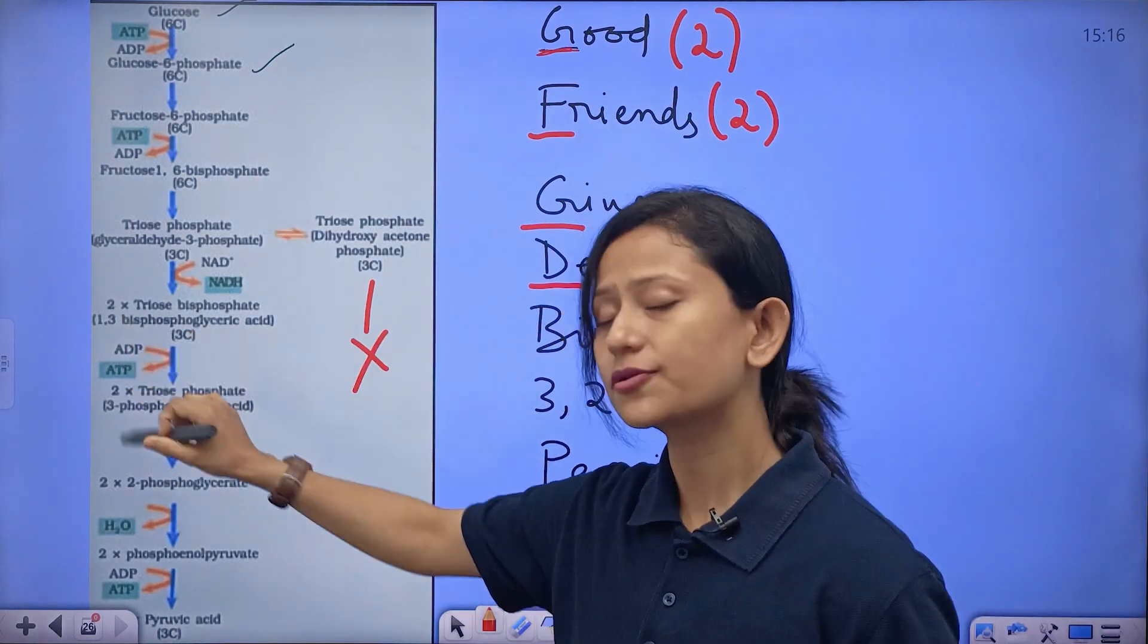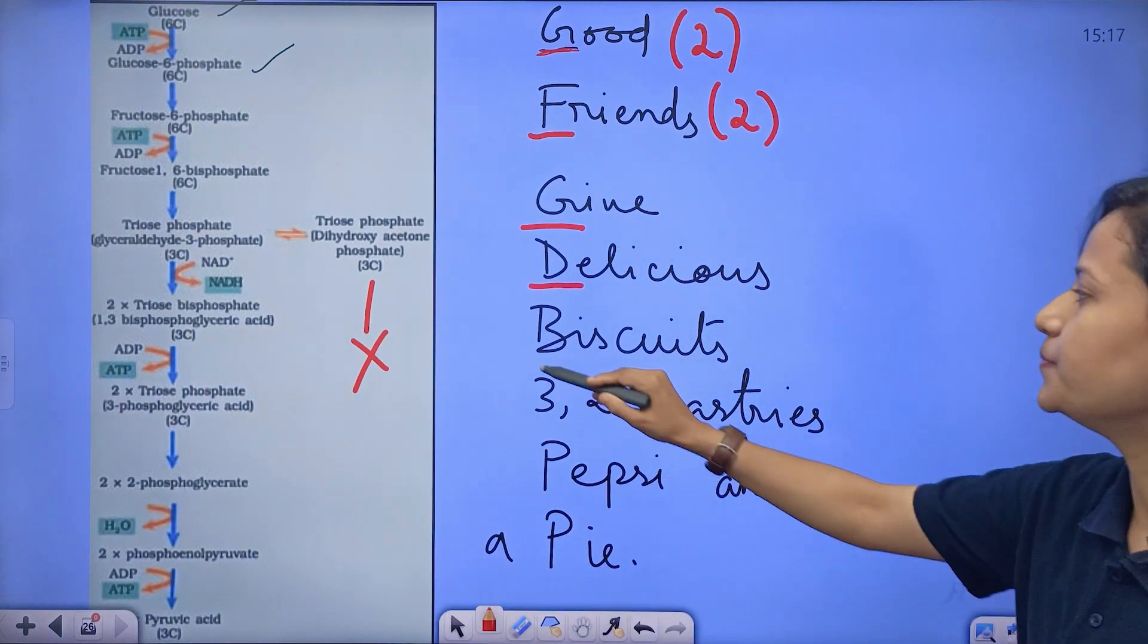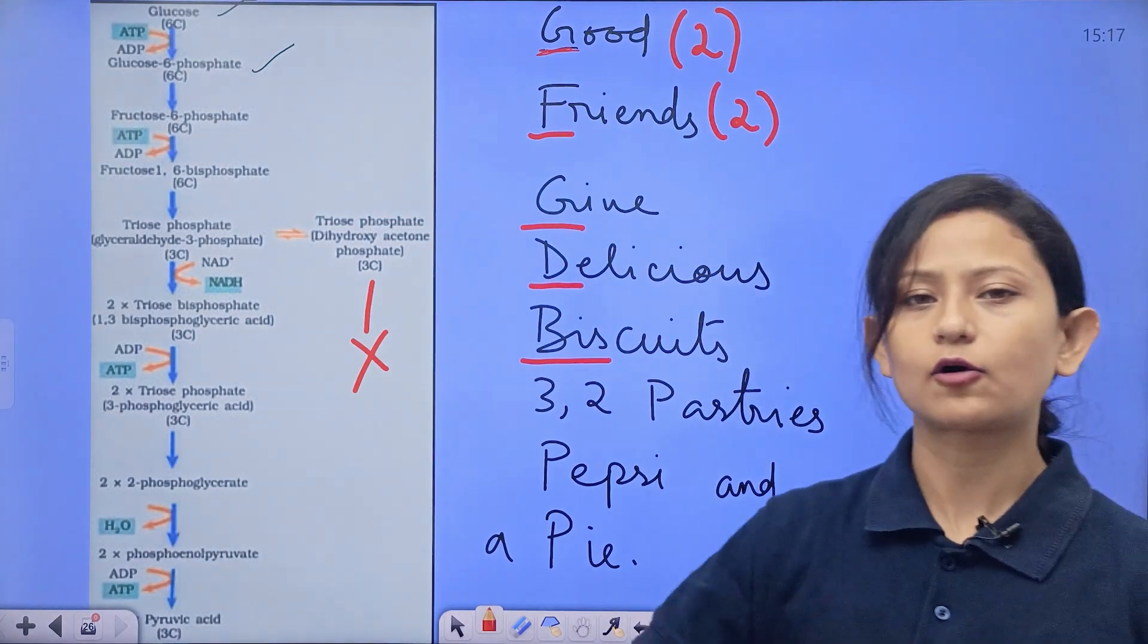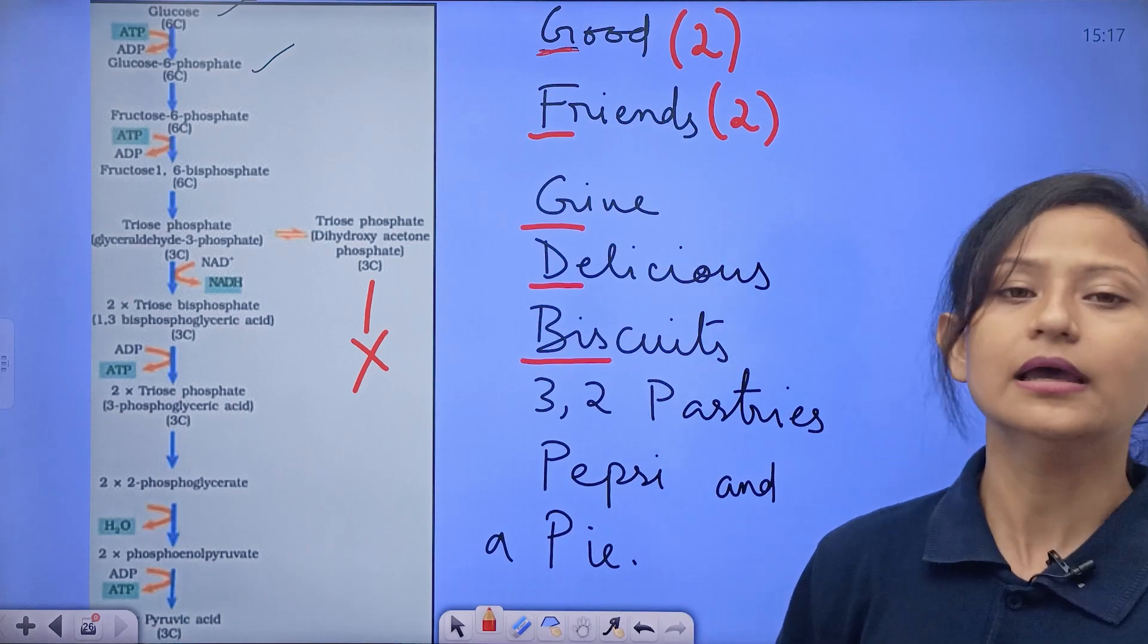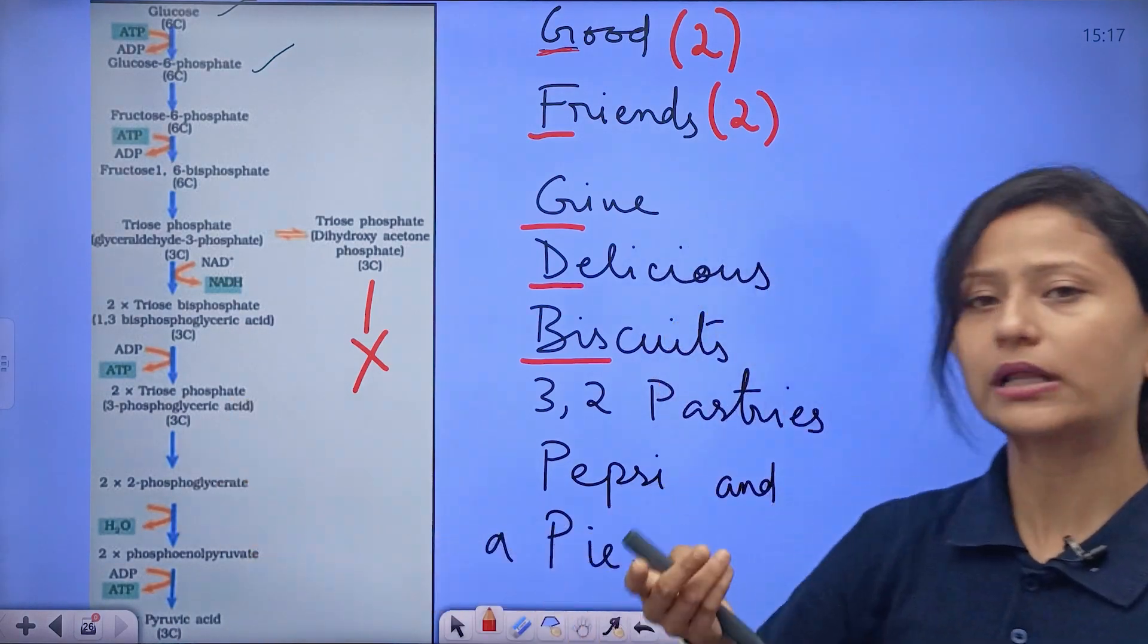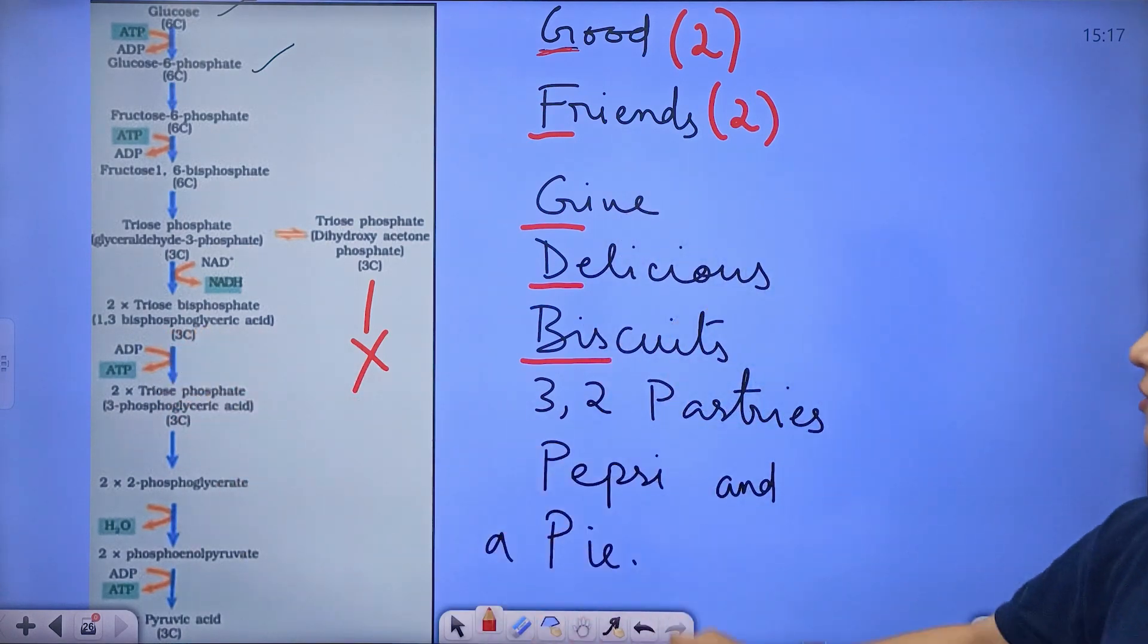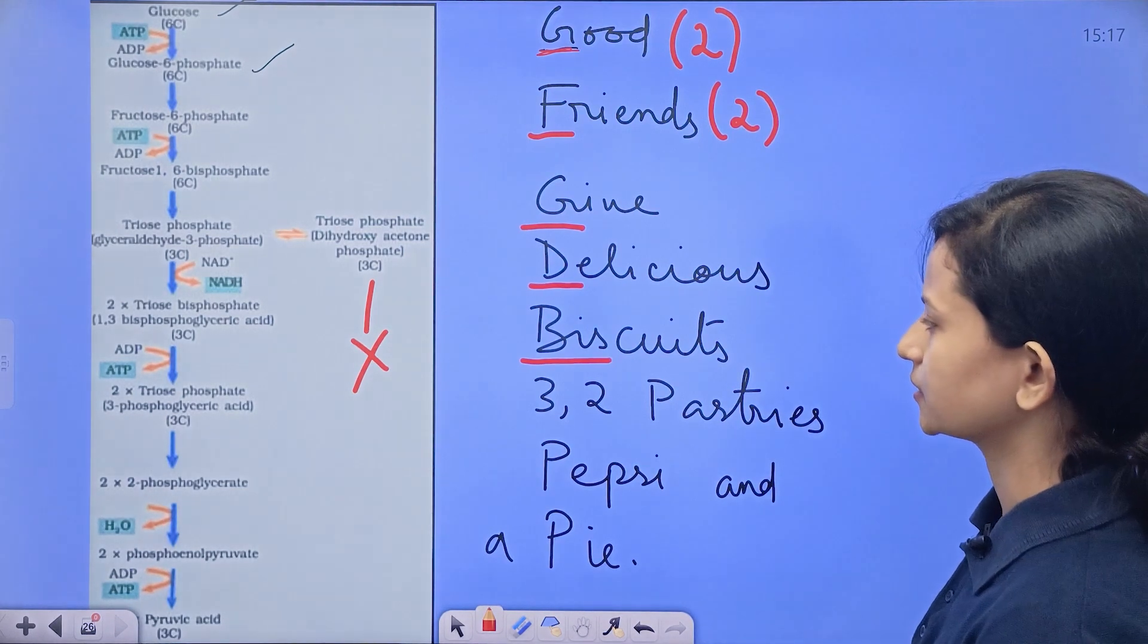Now let's move to the next. One three bis-phosphoglyceric acid. That's why biscuits: bis. It's one and three, one three bis, one three bis-phosphoglyceric acid. So bis stands for 1,3-bisphosphoglyceric acid.